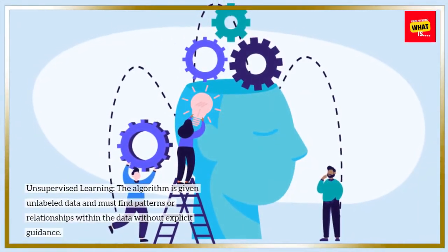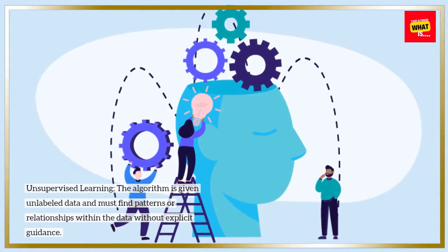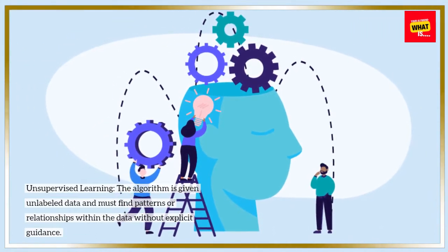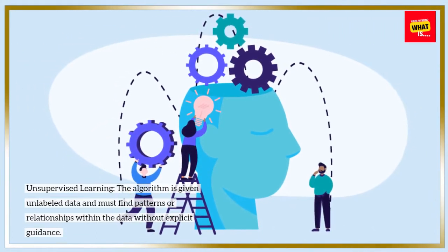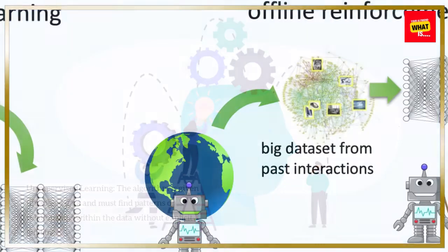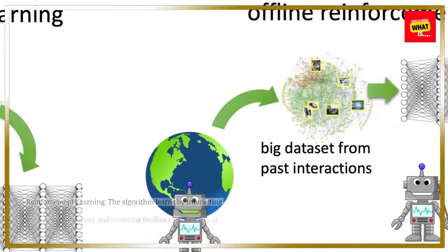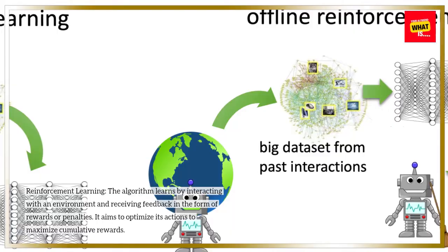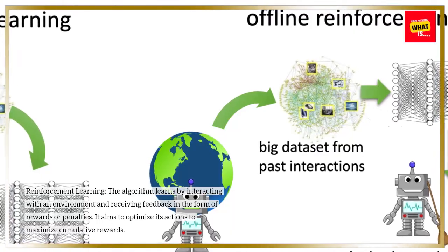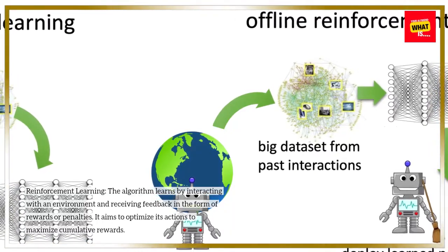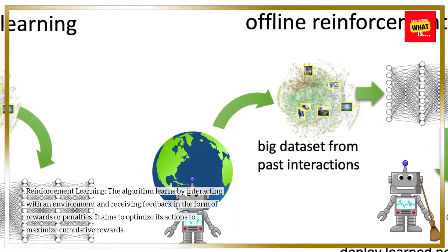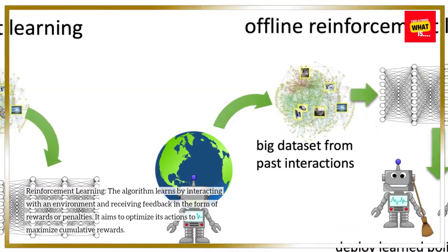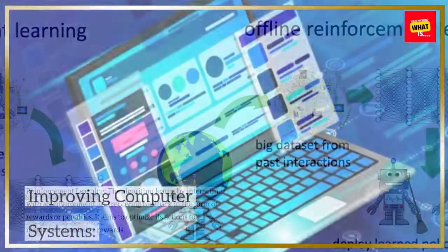Unsupervised learning: the algorithm is given unlabeled data and must find patterns or relationships within the data without explicit guidance. Reinforcement learning: the algorithm learns by interacting with an environment and receiving feedback in the form of rewards or penalties. It aims to optimize its actions to maximize cumulative rewards.